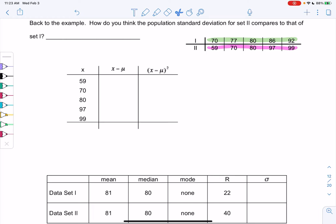Back to example 2 in section 3.3. So back to the example. How do you think the population's standard deviation for set 2 compares to that of set 1?